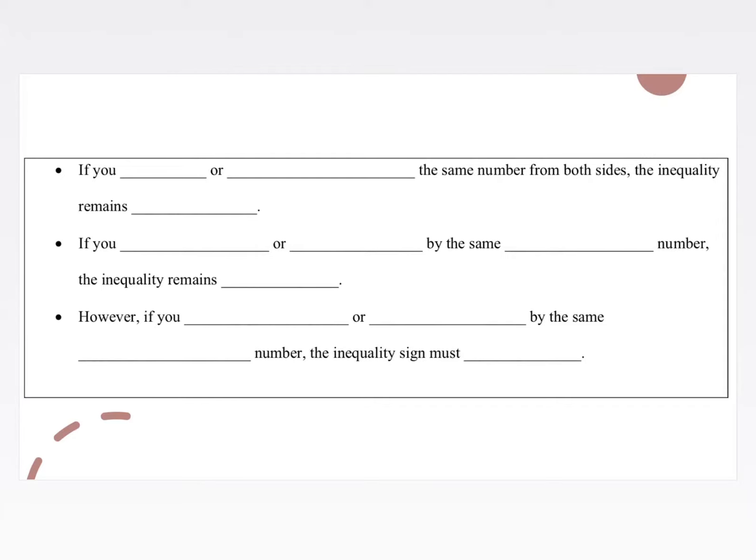Let's start off with some notes. If you either add or subtract the same number from both sides, we want to keep that property of equality from Topic 1 in mind. The inequality remains true.